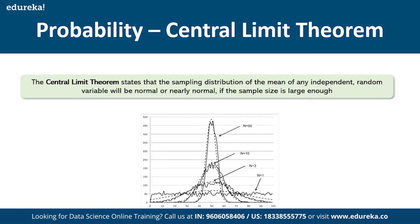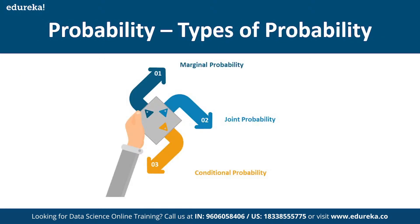The central limit theorem is a kind of hypothesis-based concept. It states that the sampling distribution of the mean of any independent random variable will be normal or nearly normal. You can see from the diagram that as the sample size n increases — 1, 3, 10, 50 — the bell curve becomes more defined.